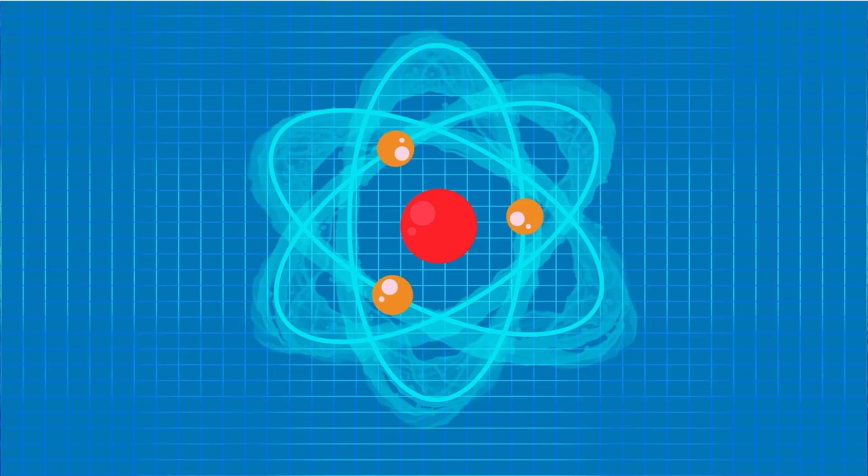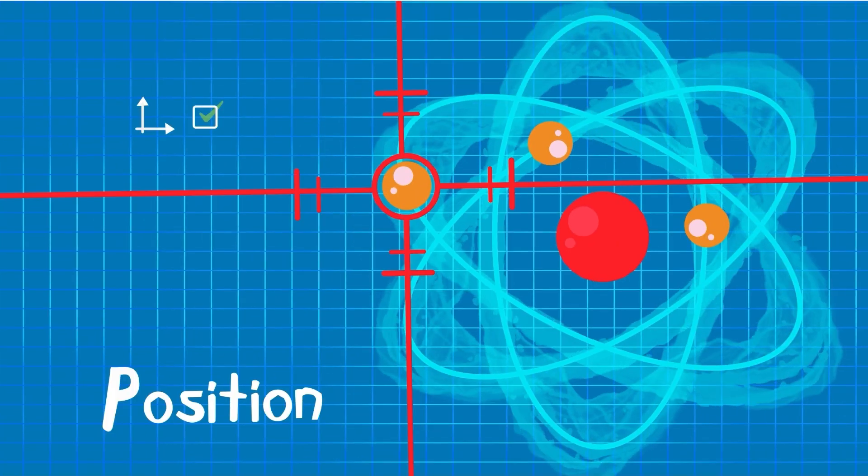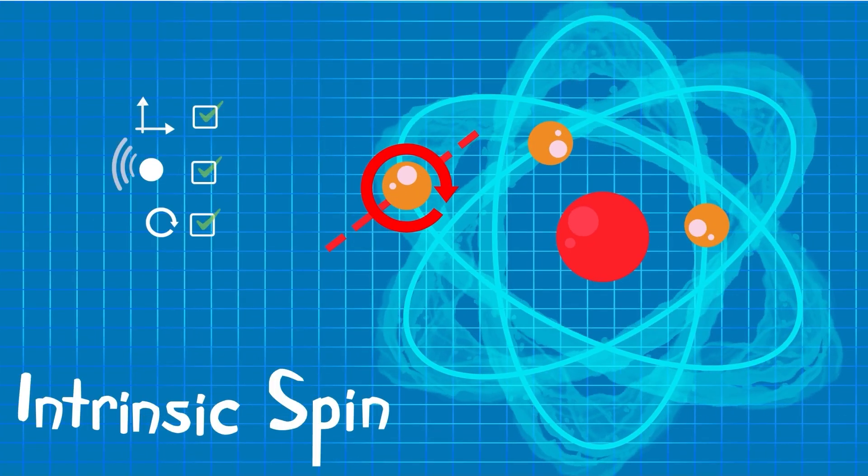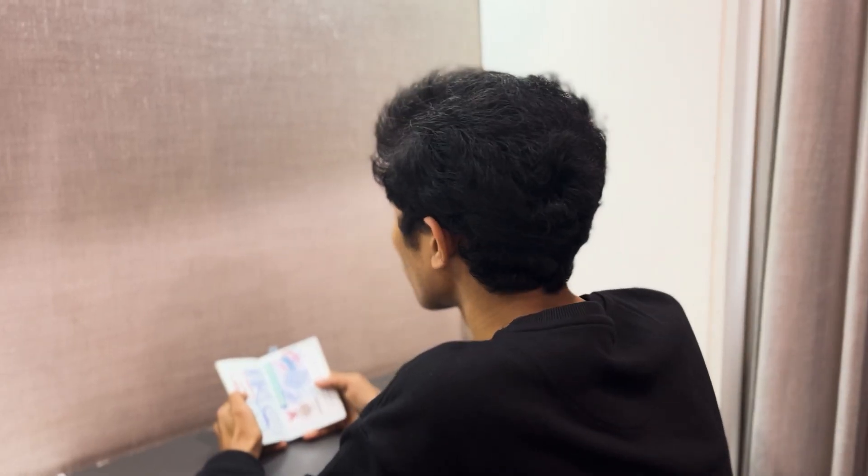Hold your horses there. In quantum physics, atoms and electrons are defined by things like position, momentum, and intrinsic spin, which provides them with a unique identity. Now, this identity is quite confidential.